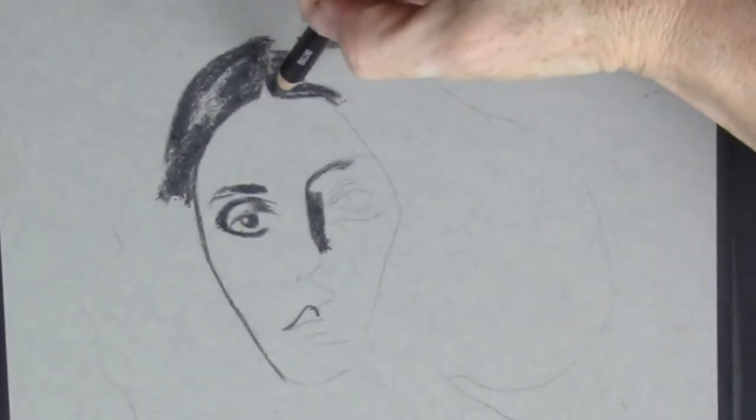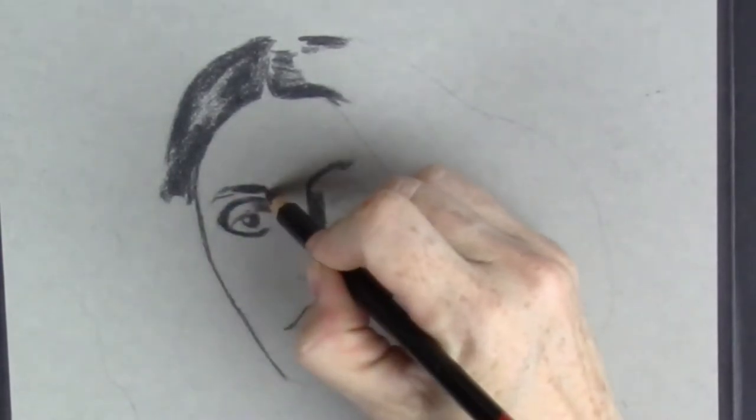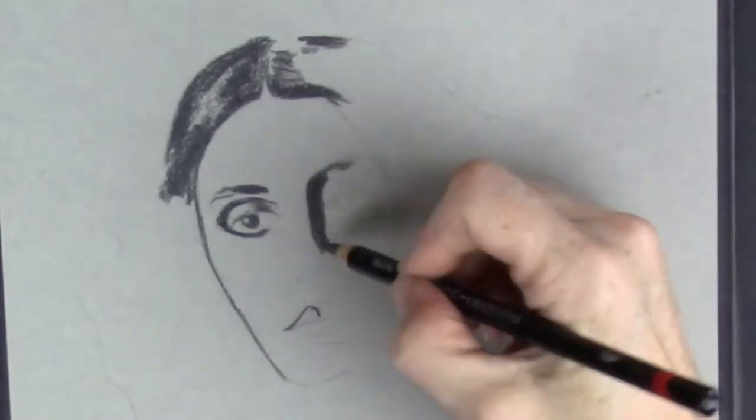So to begin with, we're just outlining her face, outlining the eyes, the nose, the mouth, and the hairline.